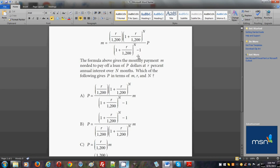If you multiply this whole fraction by the denominator—which is 1 plus r over 1200 to the power of n minus 1—you will have one in the denominator, so you'll have the numerator divided by one.